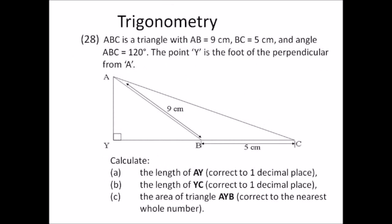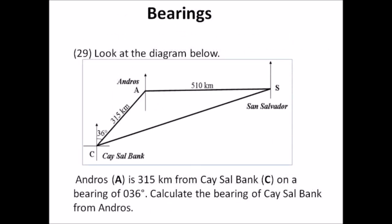Number twenty-eight: trigonometry. Triangle ABC has AB equal to 9 centimeters, BC equal to 5 centimeters, and angle ABC equal to 120 degrees. Point Y is the foot of the perpendicular from A. Calculate: a) the length of AY correct to one decimal place; b) the length of YC correct to one decimal place; c) the area of triangle AYB correct to the nearest whole number. Use sine, tangent, and cosine — these will be given on the paper.